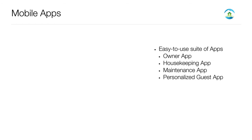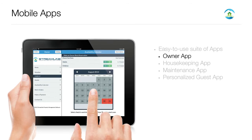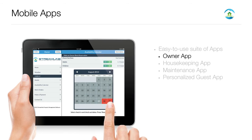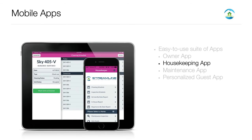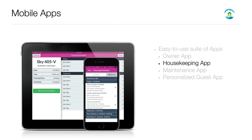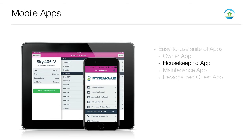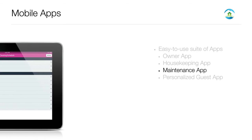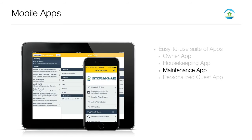Everybody needs mobile apps these days. Do you want to impress new potential owners? We offer an owner application that allows the property manager to stay connected with the owner. Simplify the housekeeping process through our bilingual housekeeping mobile app. This allows you and the housekeeping team to clearly communicate and efficiently complete their work. We even track the location of the housekeepers using the mobile application. Create tickets from your phone from the rental unit, take pictures of issues discovered at a rental property, enter notes and push it directly into the maintenance team. Automate your maintenance team and optimize efficiency in the field.